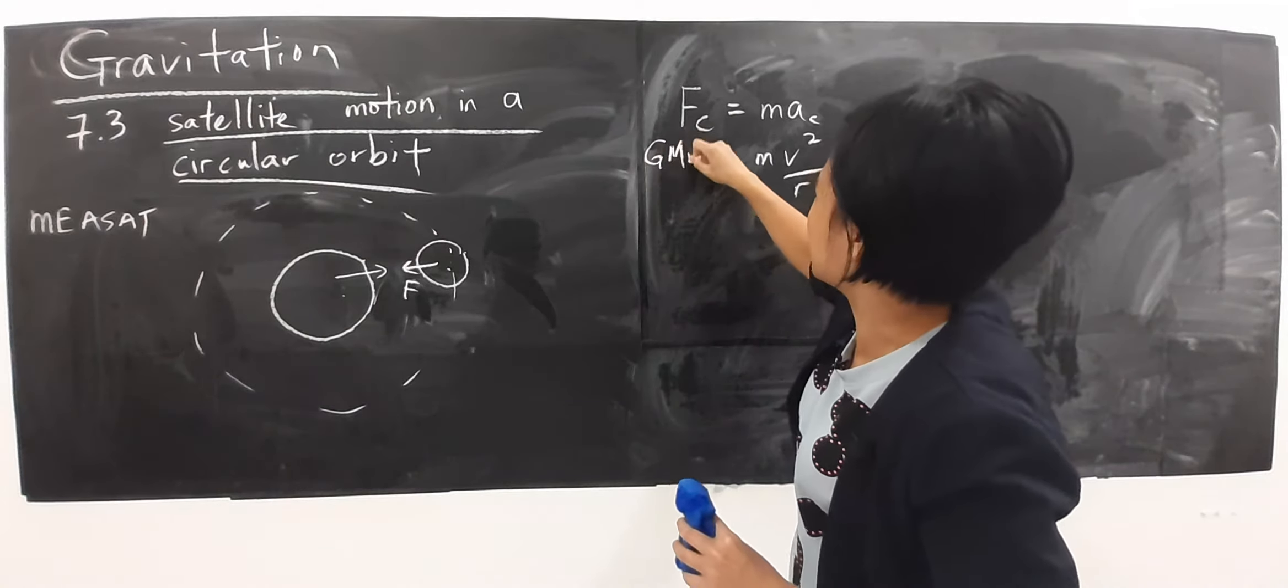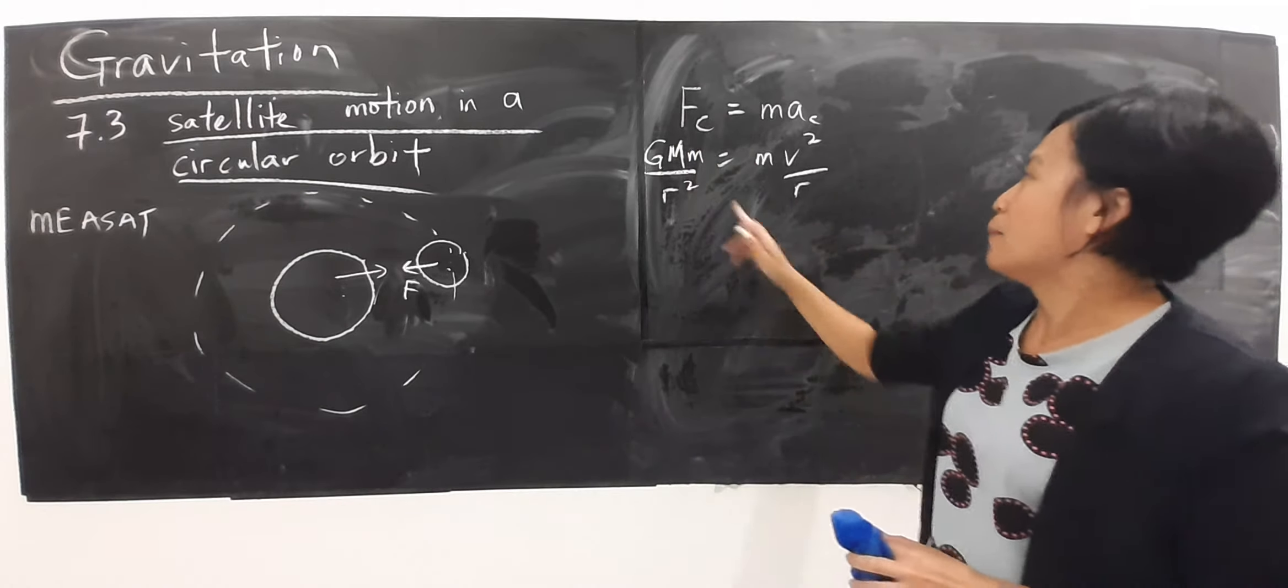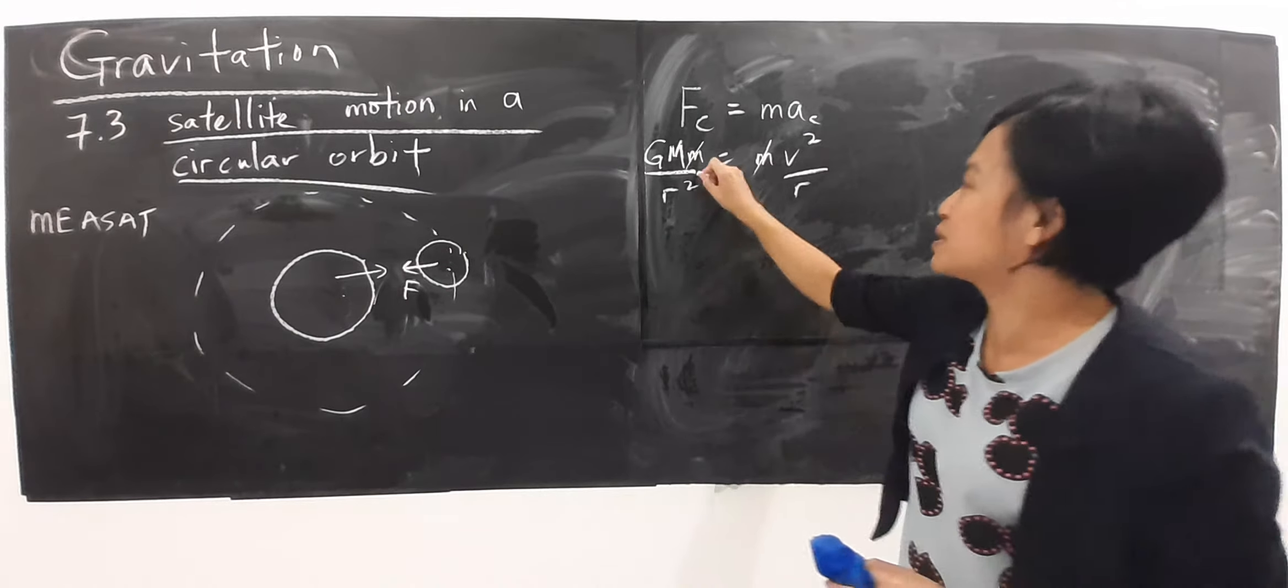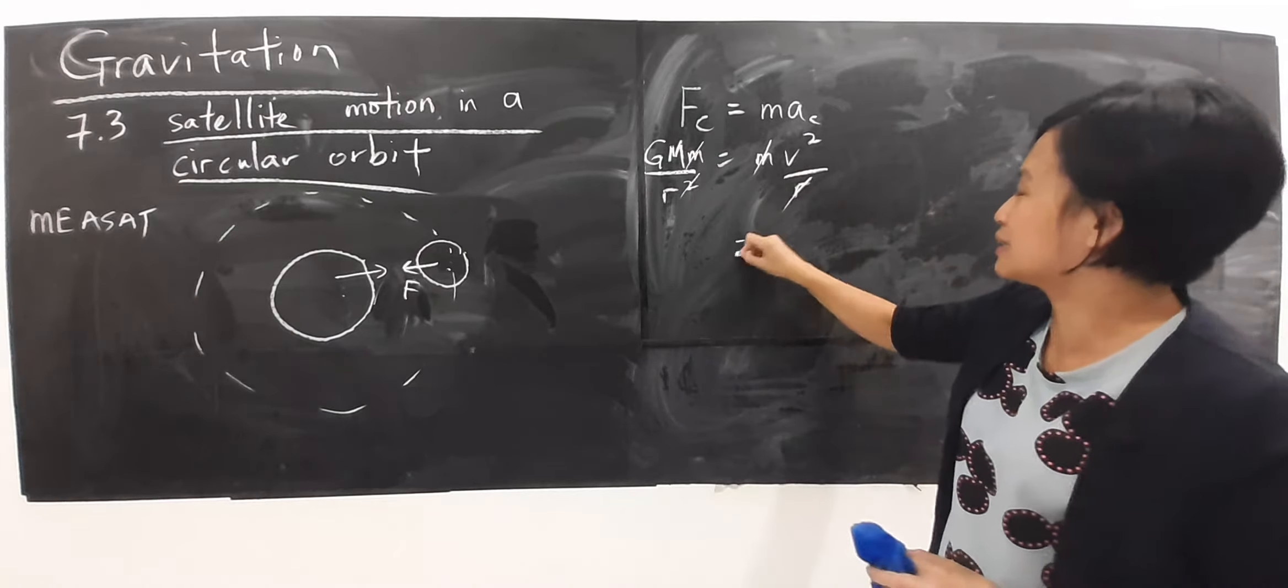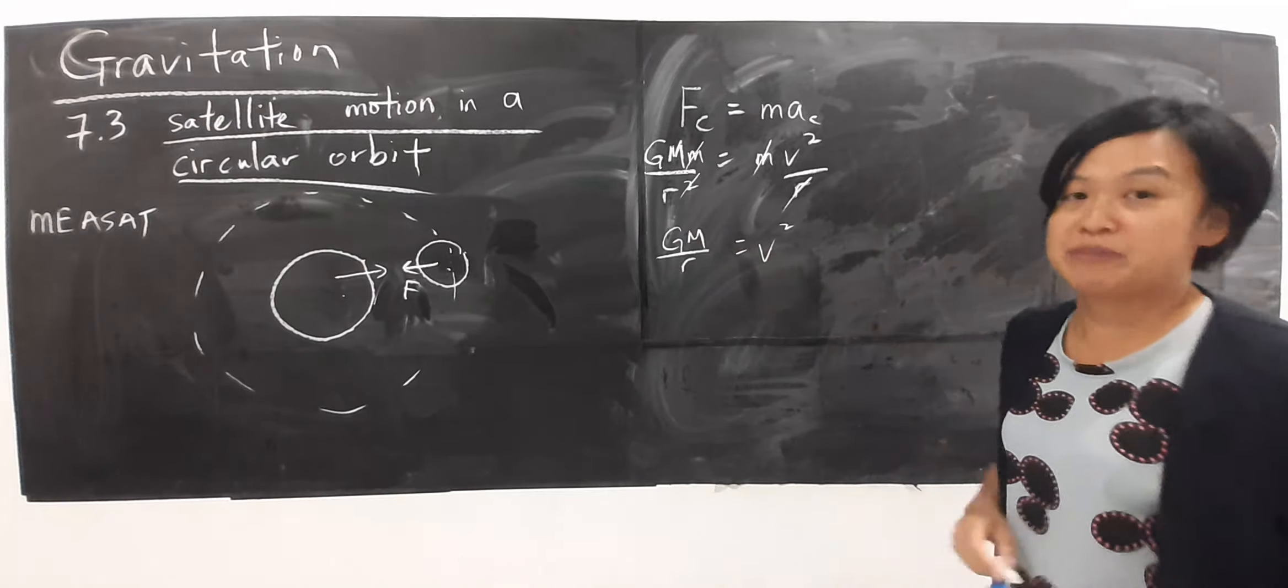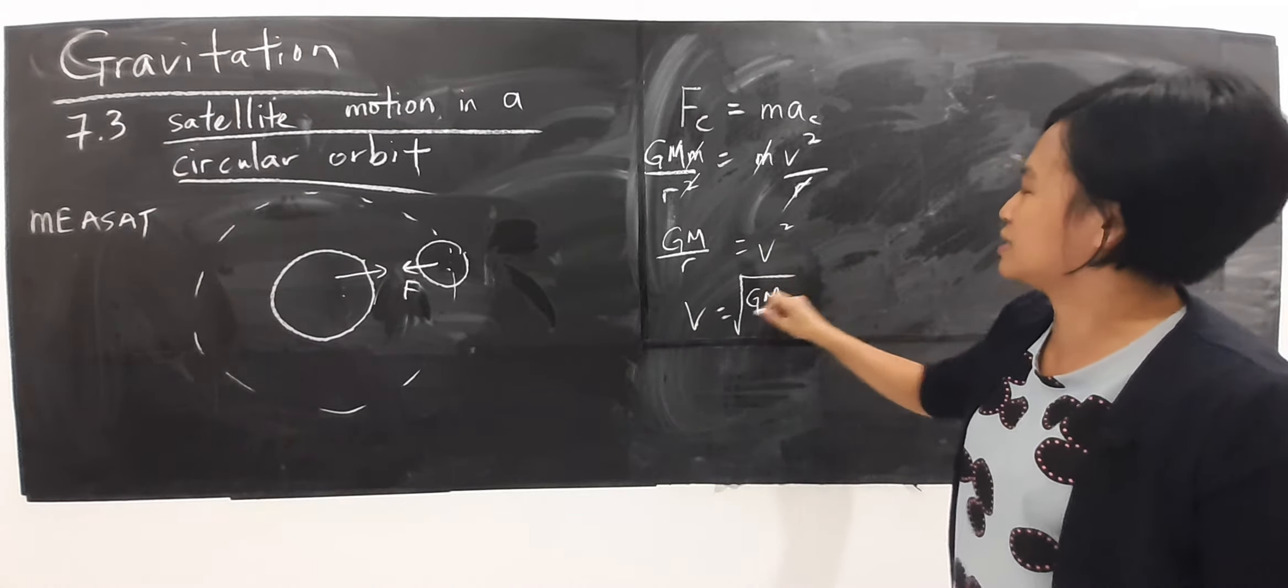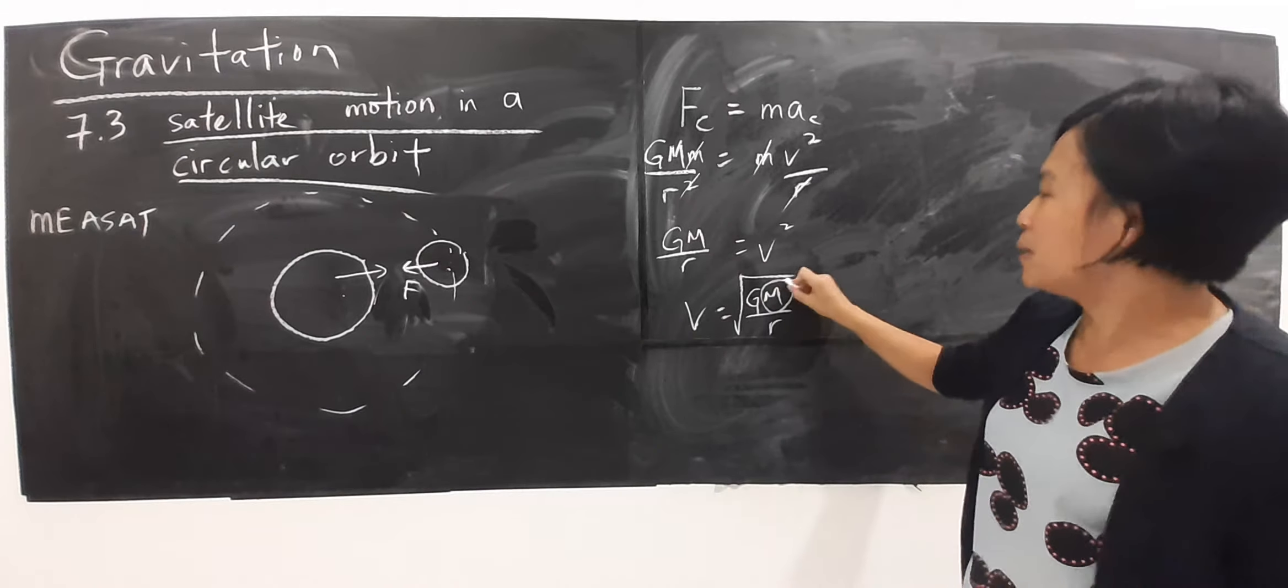The formula, gravitational force, gravitational force, like this. Both sides are the small m, both sides are the R. The thing that left is this. Speed for the satellite, I want v, square of both sides, I will get this. So always remember,